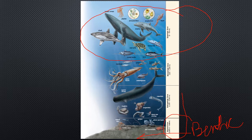Aquatic biomes are not divided based on plants the way terrestrial biomes are — the amount of plants compared to the volume of ocean water is very small. Instead we divide ocean biomes based on salinity, temperature, and the organisms present. Interestingly, most of the ocean still remains unexplored — there's a tremendous amount still to learn about our own planet.